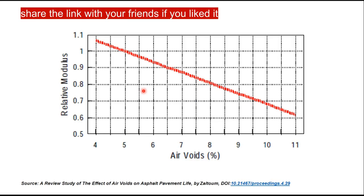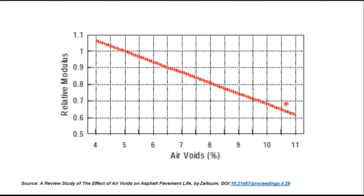Regarding the effect of air voids: if resilient modulus at 5% air voids is taken as the standard with a ratio of 1, then reducing air voids increases MR while increasing air voids reduces it. You can find literature showing the influence of other parameters like VMA or VFB on resilient modulus.